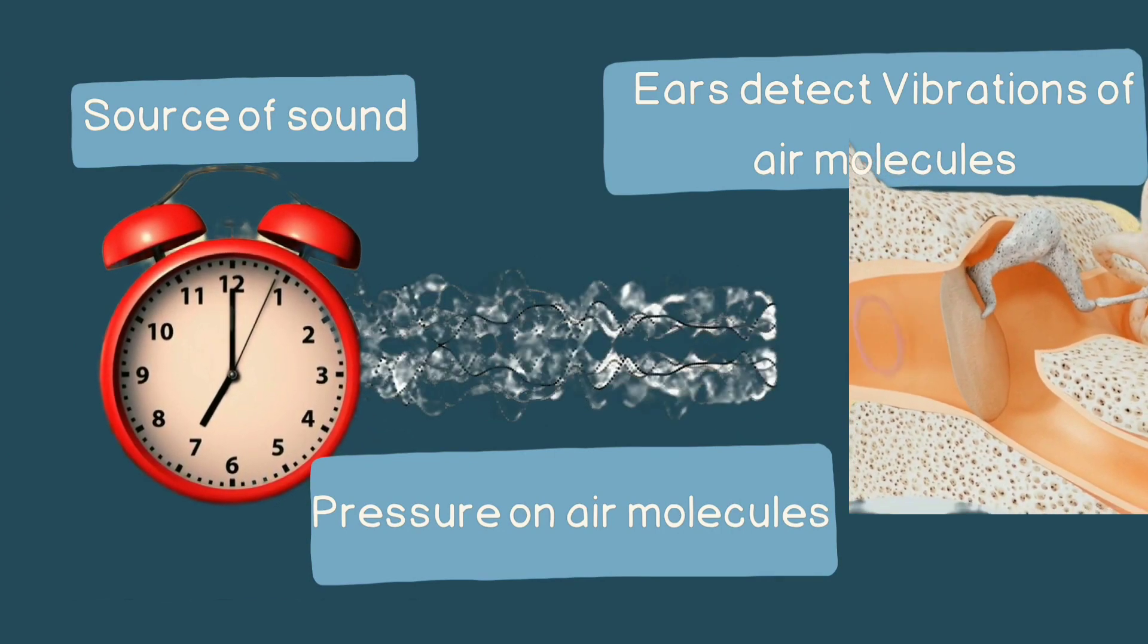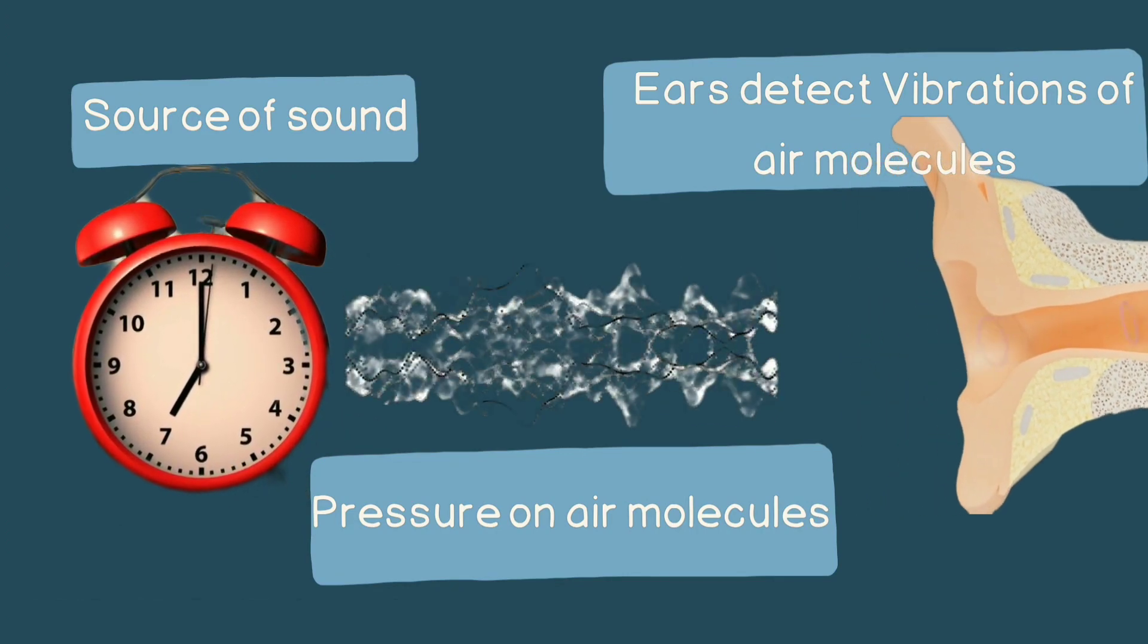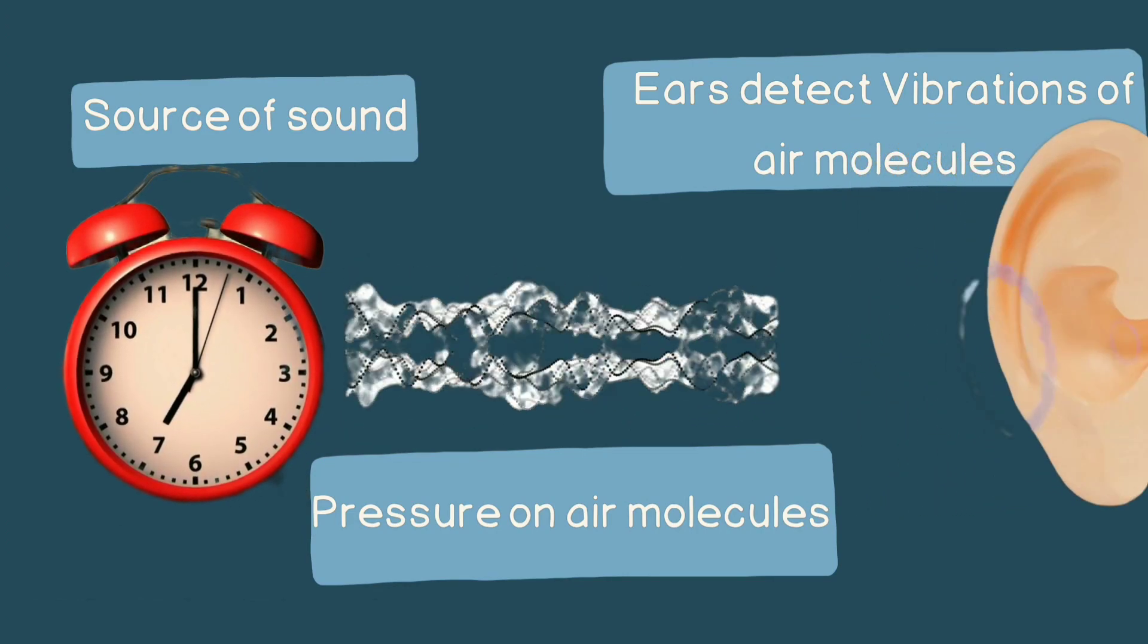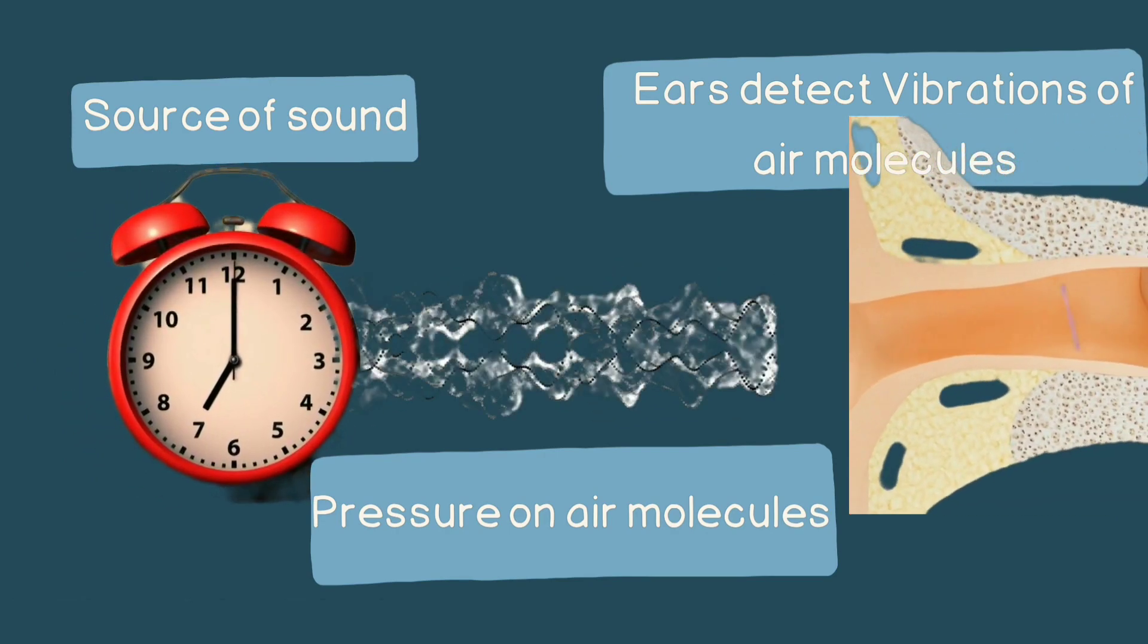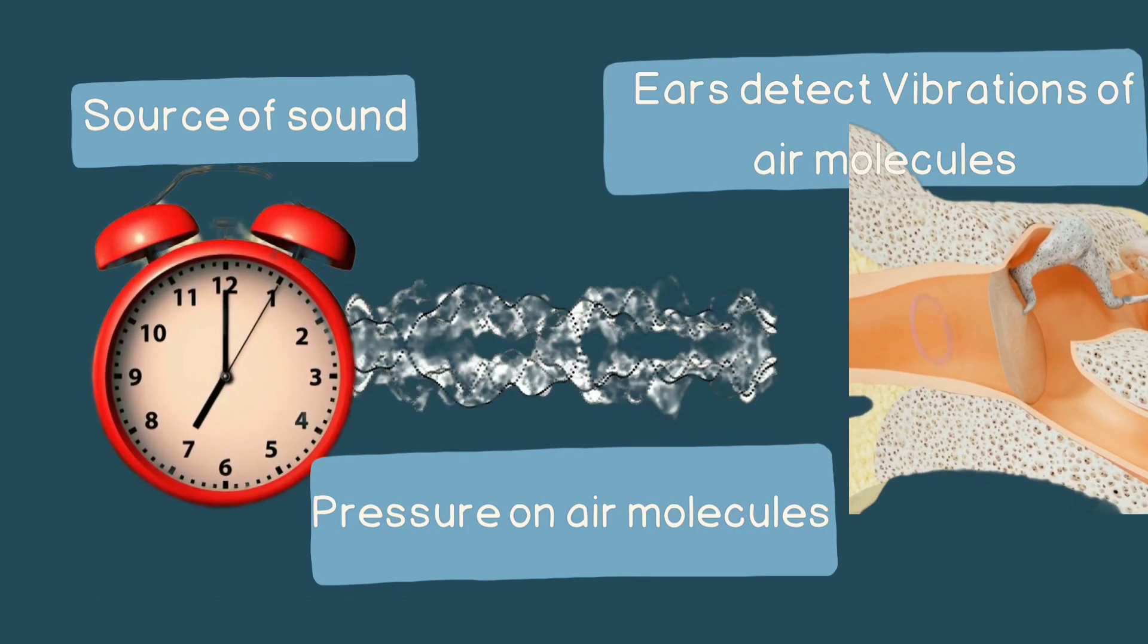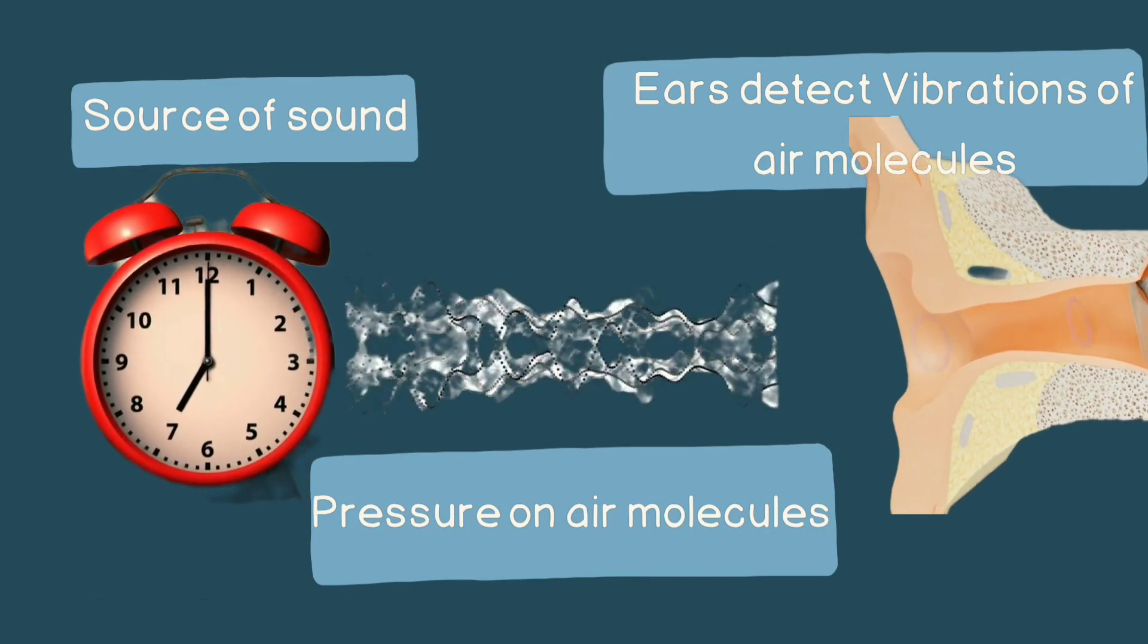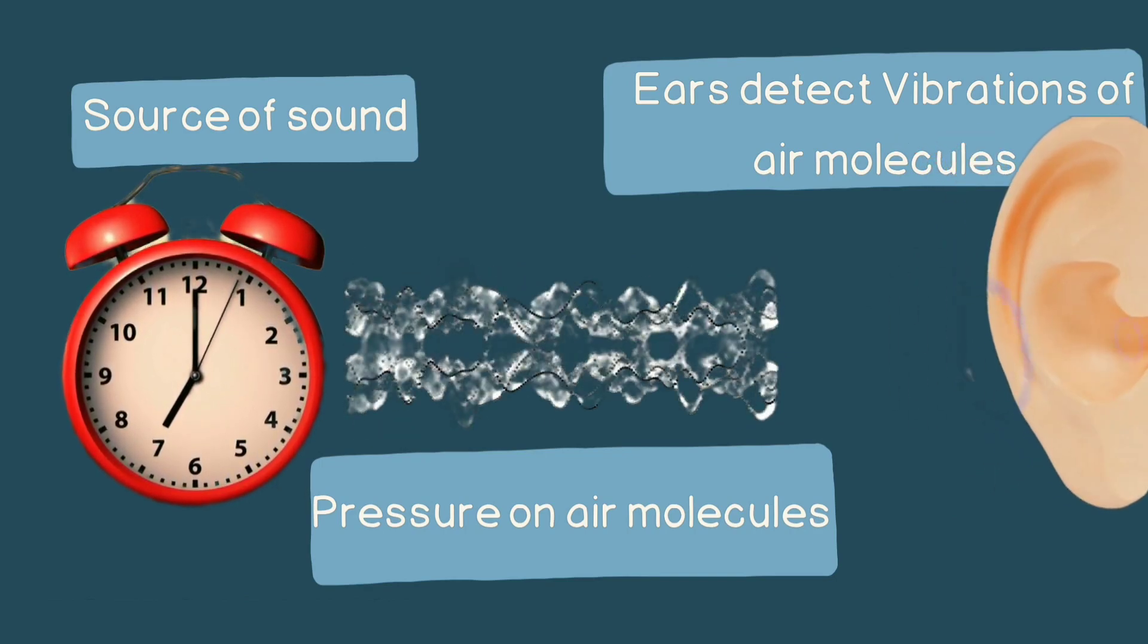This in turn causes tiny bones in our inner ear to vibrate as well. These vibrations are then translated into electrical signals where they are interpreted as sound. So when an alarm clock produces sound by creating pressure waves in the air, our ears detect them through the vibrations of our eardrums and inner ear bones.